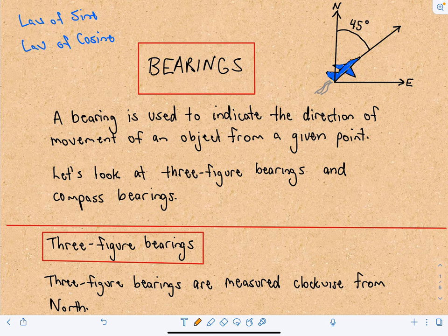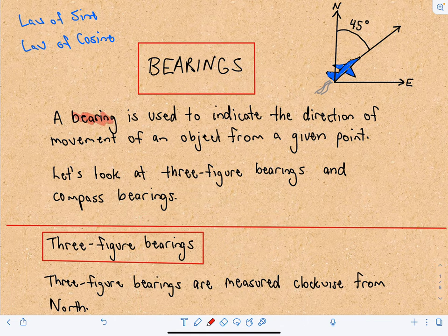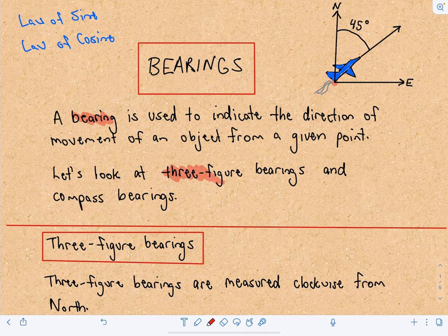In this video we're going to start talking about bearings and look at a couple of examples at the end. A bearing is simply used to indicate the direction of movement of an object from a given point. So maybe you've got an airplane going in a certain direction and you want to talk about which direction it's going. There are two types: three-figure bearings and compass bearings.